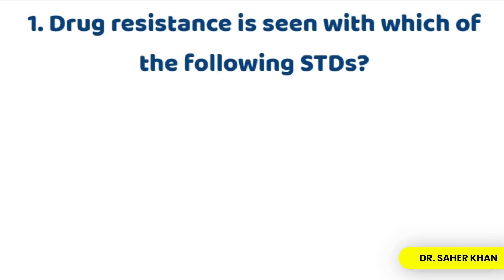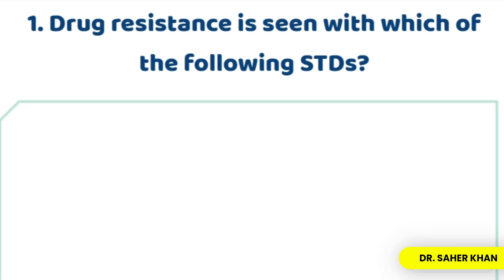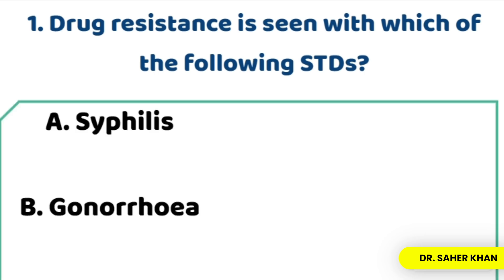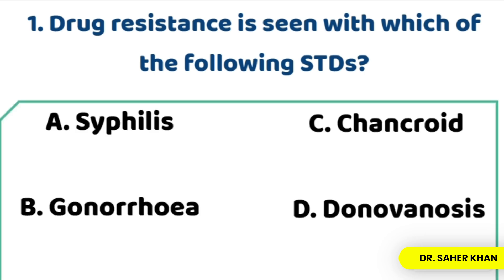This is our first question. Drug resistance is seen with which of the following sexually transmitted diseases? The options are: number one, syphilis; number two, gonorrhea; number three, chancroid; or donovenosis.